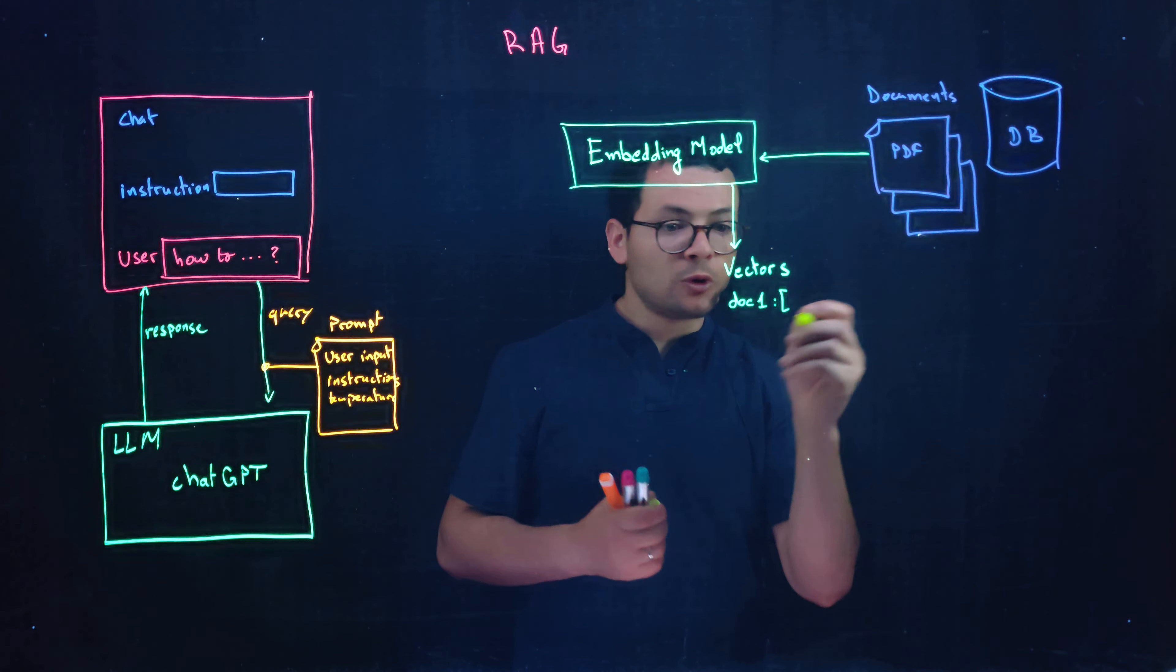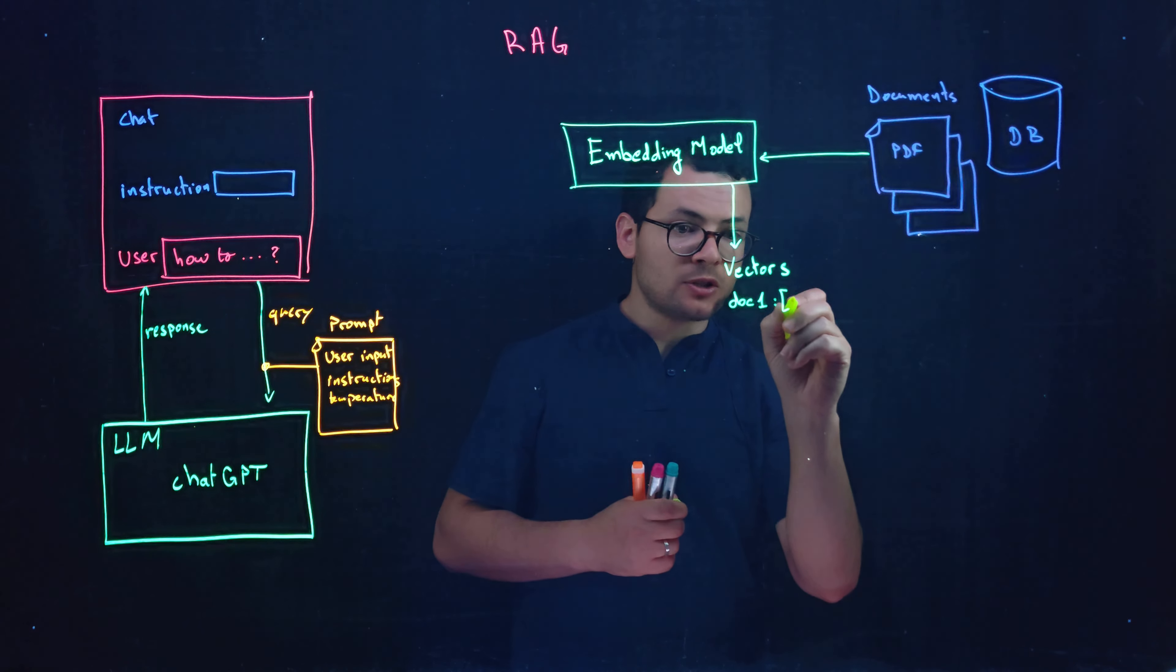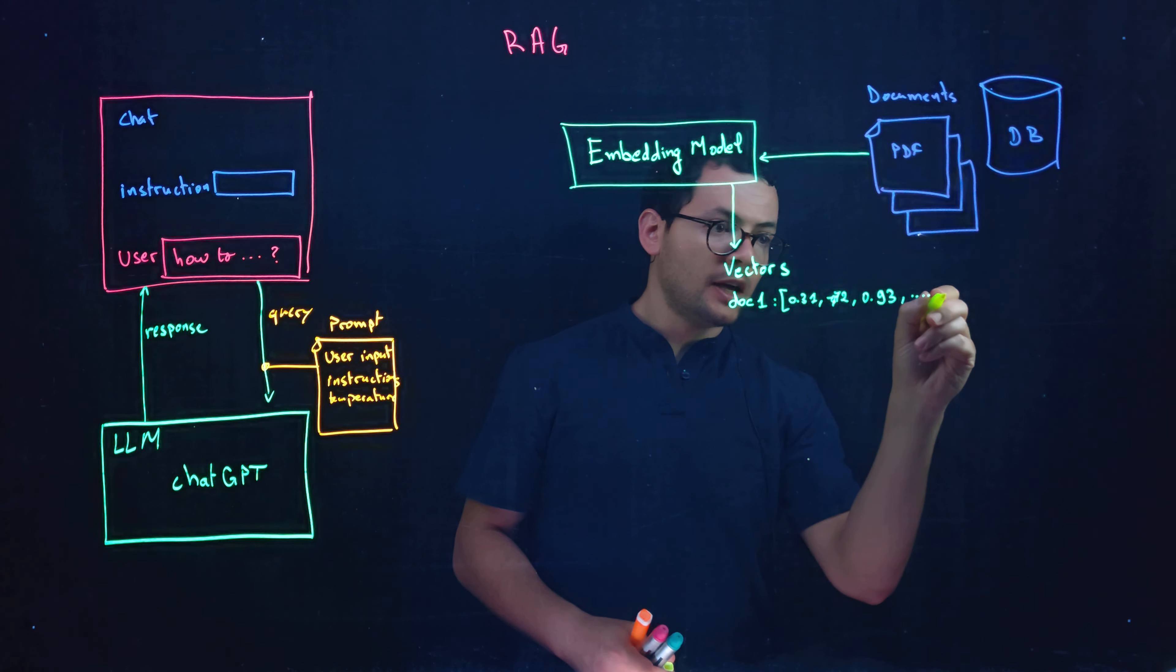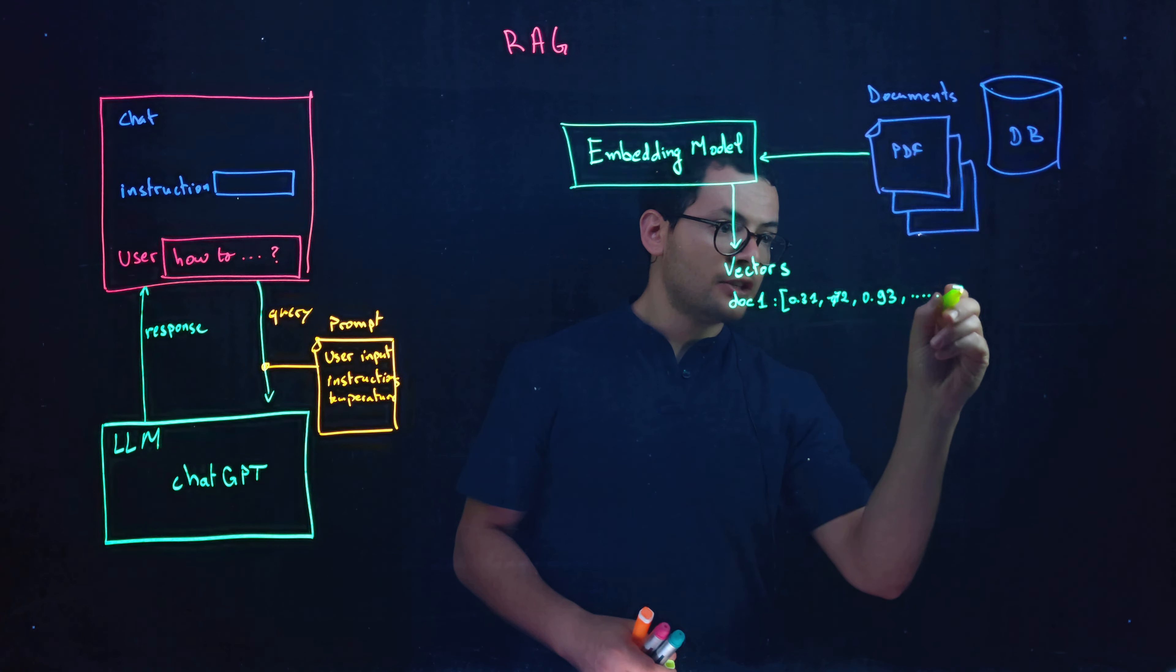So the content of the vector will be just numbers between one and minus one. So it could be something like 0.31 for example, minus 0.72, 0.93, and so on. So this is a very large vector.